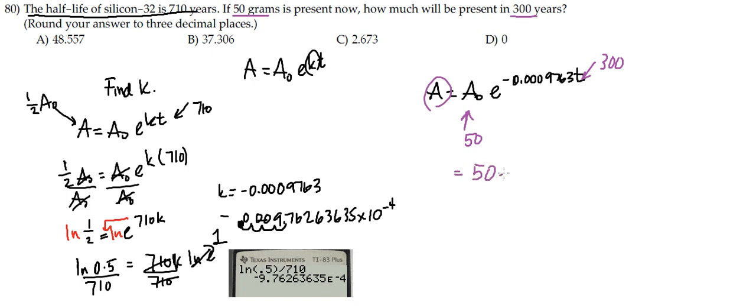So in this case, we'll just do 50 e to the negative 0.0009763 times 30. Now we've got to be a little bit careful about how we enter that in the calculator.